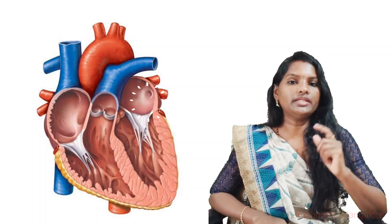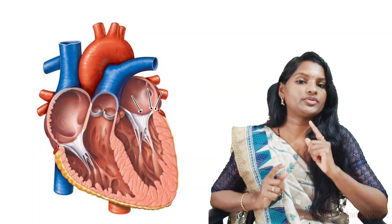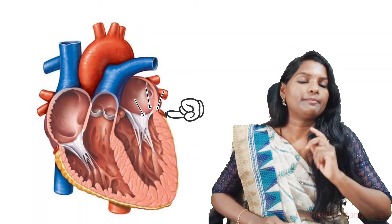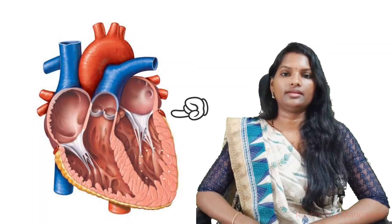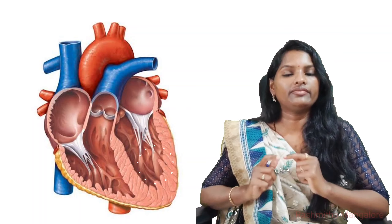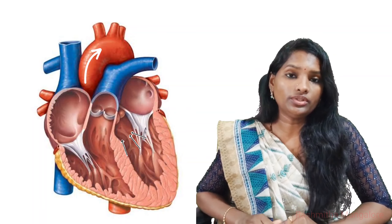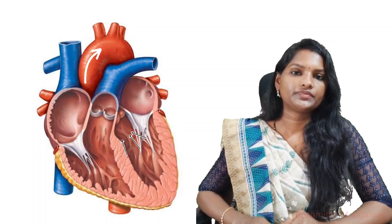When the atria contract, the oxygenated blood from the left atrium flows down into the left ventricle through the bicuspid valve, also called the mitral valve. When the ventricles contract, this oxygenated blood from the left ventricle moves to the aorta through the aortic valve, and from there it is transported to all parts of the body.